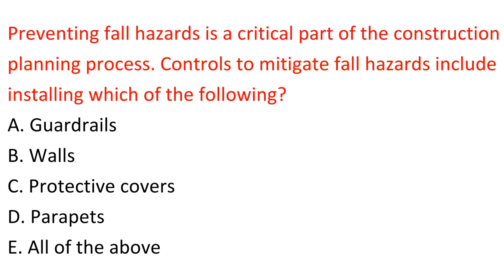Question: Preventing fall hazards is a critical part of the construction planning process. Controls to mitigate fall hazards include installing which of the following? A. Guardrails. B. Walls. C. Protective covers. D. Parapets. E. All of the above. Answer: E. All of the above.